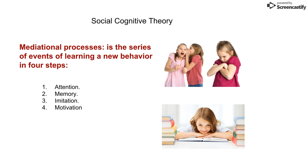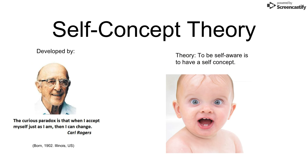The observational learning process is a series of events involved in learning a new behavior. Any kind of behavior has to pass through four steps: attention, memory, imitation, and motivation.